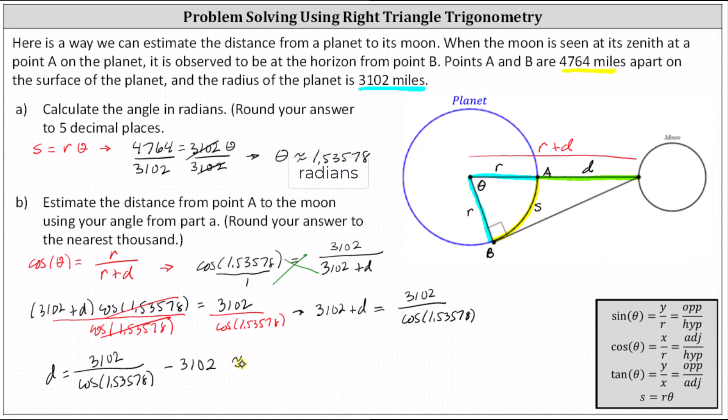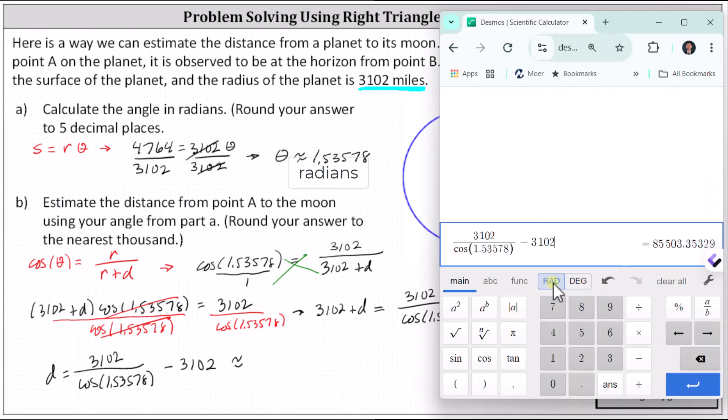Now we need to be careful when evaluating this. We're told to round to the nearest 1,000. So going to the calculator, we do want to make sure the calculator is in radian mode, which the calculator is. Looking at the value, because we have a 5 in the hundredths place value, we round up to 86,000 miles.